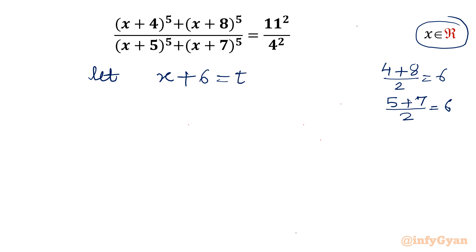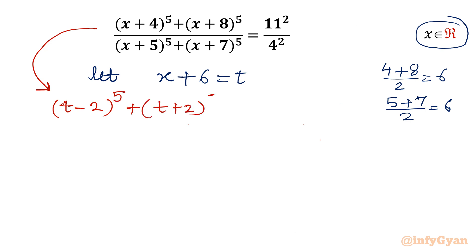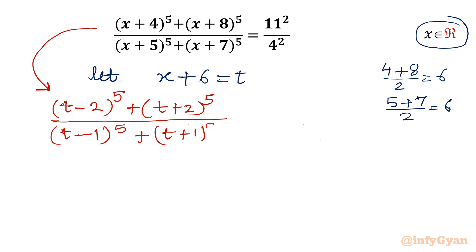So x+4 will be t−2, and x+8 will be t+2. Let's write our equation in the variable t: (t−2)^5 + (t+2)^5 over (t−1)^5 + (t+1)^5. The right-hand side is 11² which is 121, over 4² which is 16.